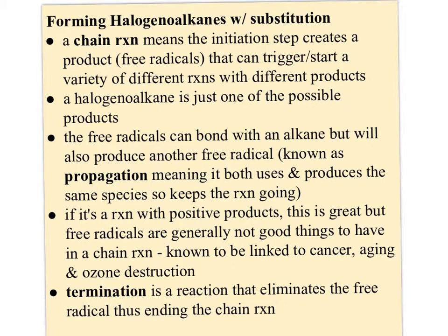A halogenyl alkane is just one of the possible end products from this chain reaction. The free radicals can bond with an alkane, but they also produce another free radical. This is called propagation because it both uses and produces a free radical, which keeps the reaction going. Free radicals are generally not good things — they've been linked to cancer, to aging, and to ozone destruction from chlorine molecules in the atmosphere. Termination is the final step where a reaction eliminates the free radical, ending the chain reaction.